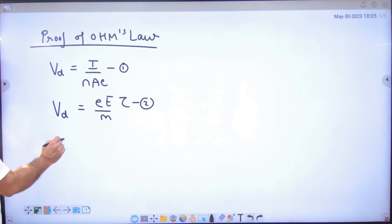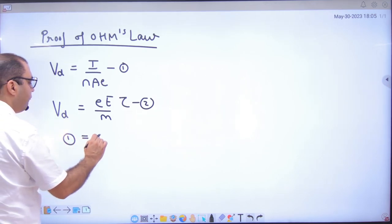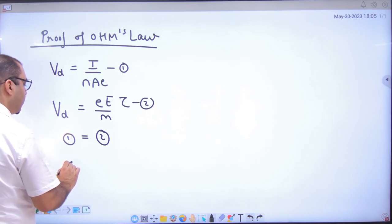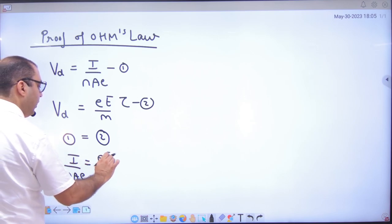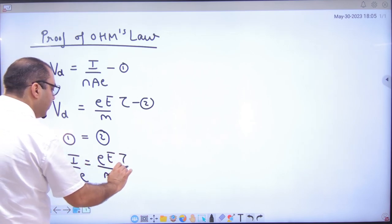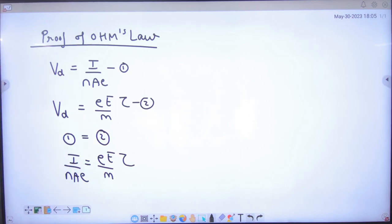So because the two formulas of drift velocity, 1 is equal to 2. So what would you have to say? I by NAE is equal to E by M into Tau. So what do you have to equate?